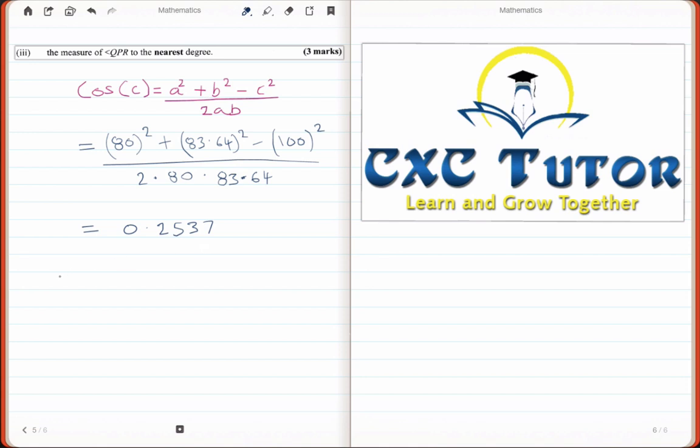And therefore, C should equal to the cos inverse of that number, which is 75 degrees.